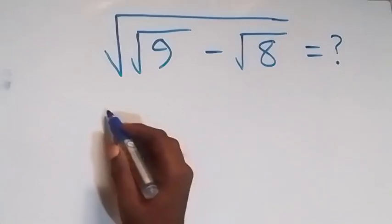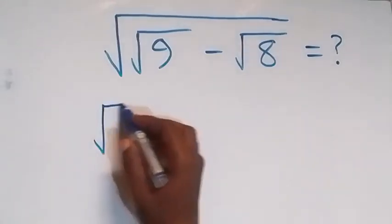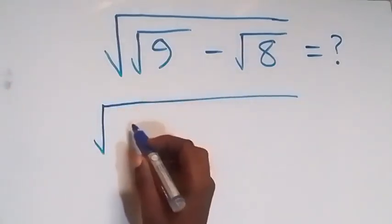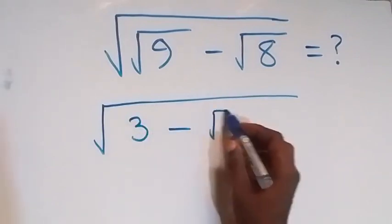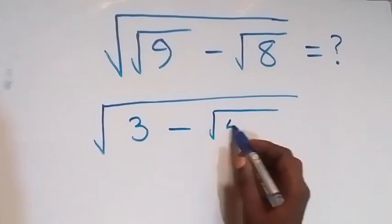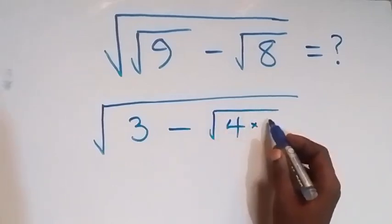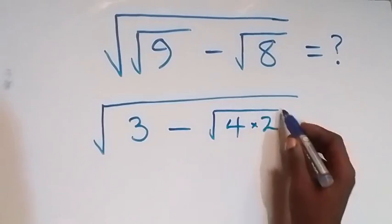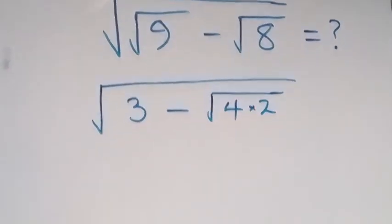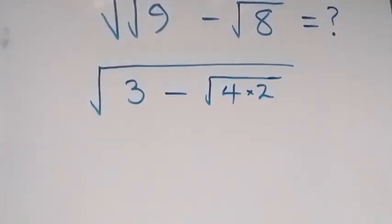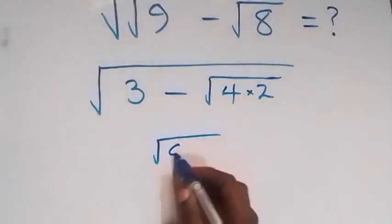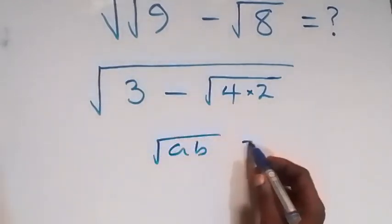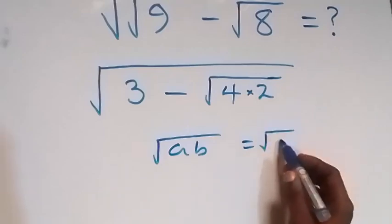From here we can rewrite this as square root of, here root 9 seems to be 3, then minus, here we can write root 8 as root 4 times 2. Then in the next step also when we have root a times b, this is the same thing as root a